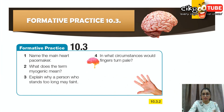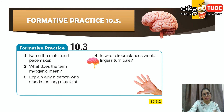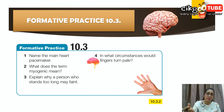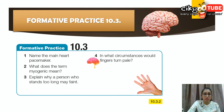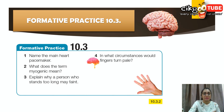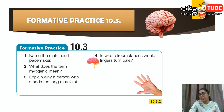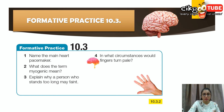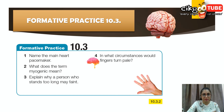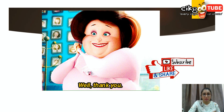We are done with subtopic 10.3. Now you can do formative practice 10.3 on page 182 to test your understanding. If you don't understand, go through the material again, make your notes, and draw the heart to see how the flow works. The practice questions are: name the main heart pacemaker; what does the term 'myogenic' mean; explain why a person who stands too long may faint; and in what circumstances would fingers turn pale? You can check your answers from the description box below.